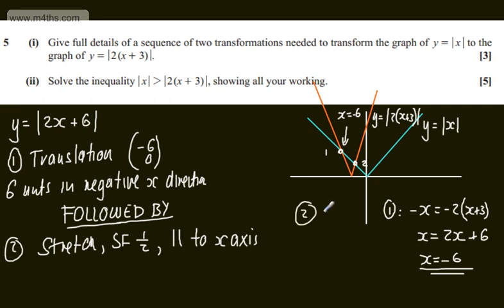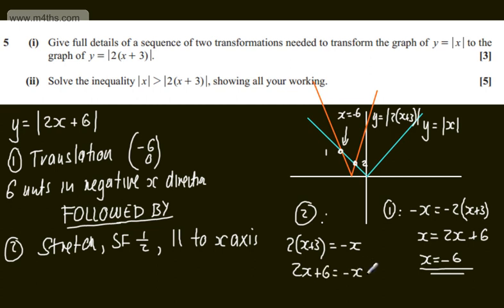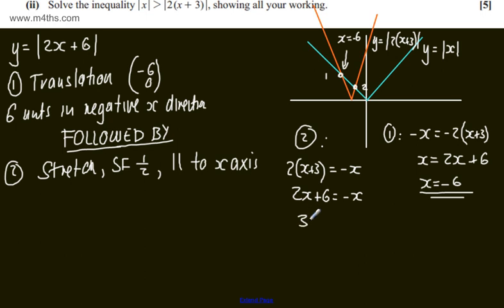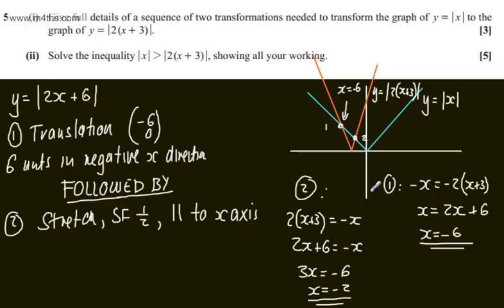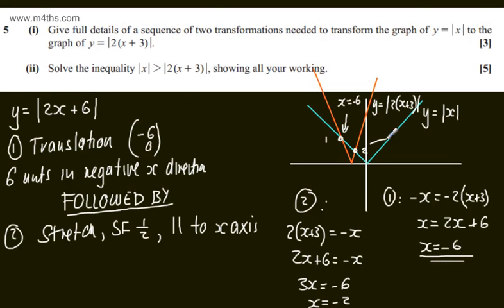At point two, we have the positive branch of |2x + 3| meeting the negative branch of |x|, so: 2x + 6 = -x. From here, 3x = -6, and x = -2. That gives us our second critical value.